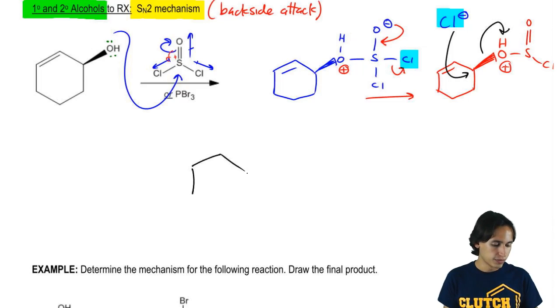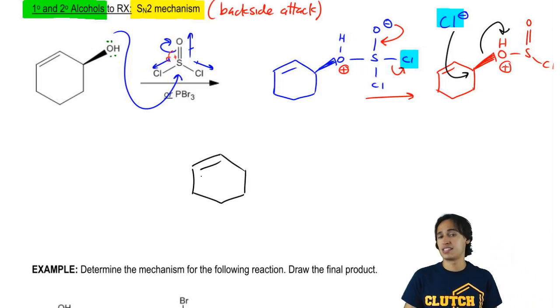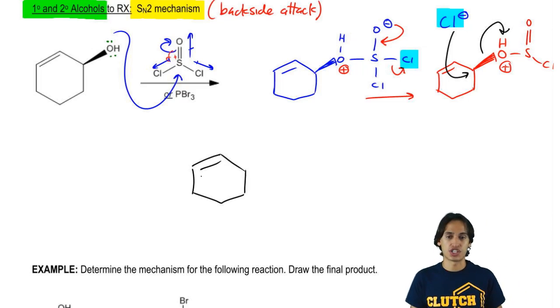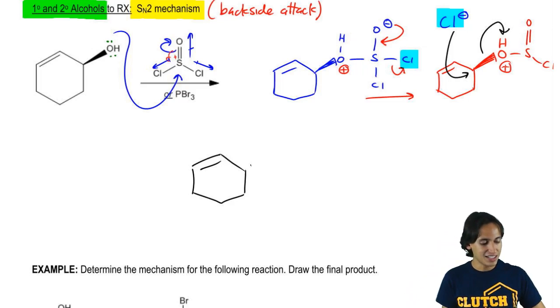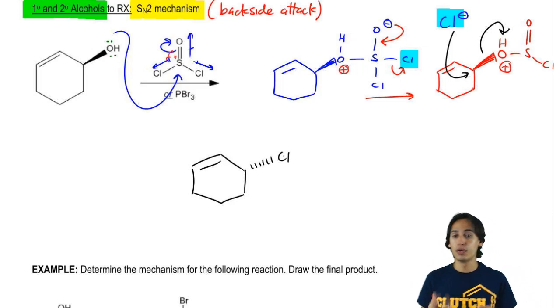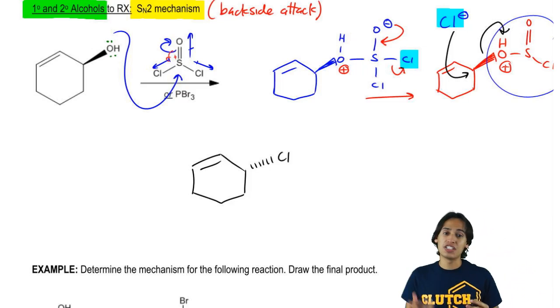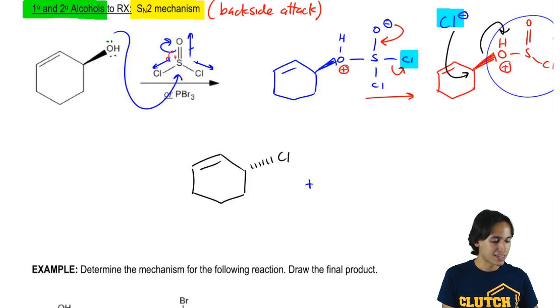What I wind up getting is an alkyl halide—in this case, an alkyl chloride—where my chlorine should be facing which direction? It needs to be on the dash. The reason is because the leaving group was on the wedge before. After a backside attack, I need to invert the stereochemistry. I get that plus my leaving group, which looks like this: Cl on one side and OH on the other.